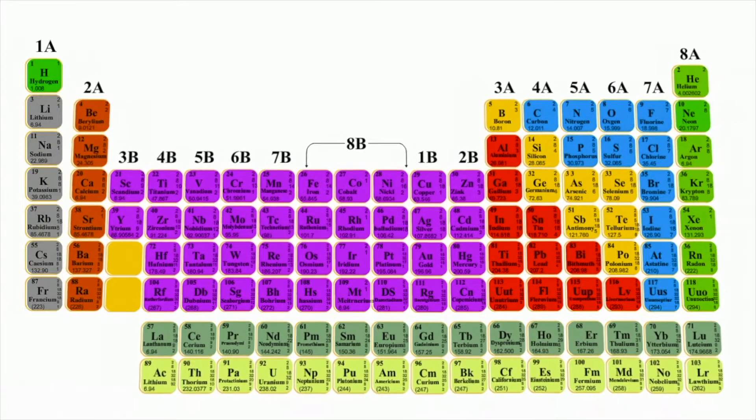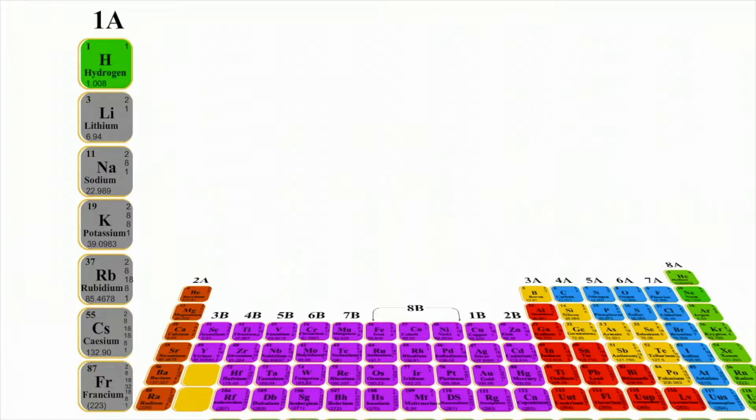Elements contained within a group share common properties. The similarity of properties is partly because each group of elements has the same number of valence electrons.